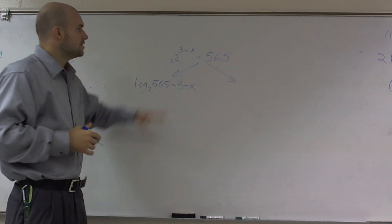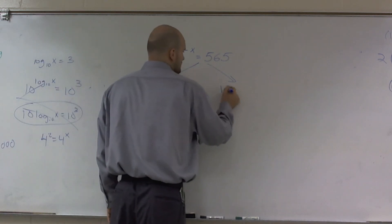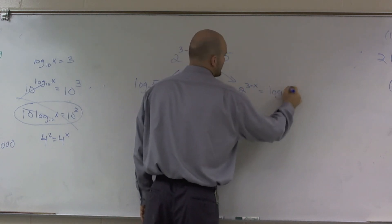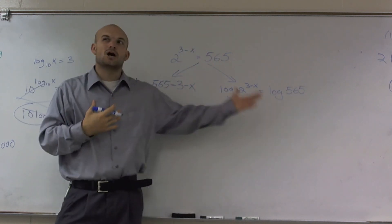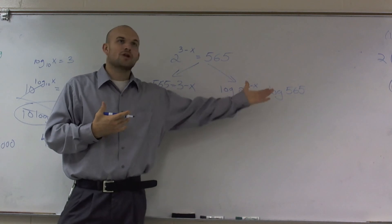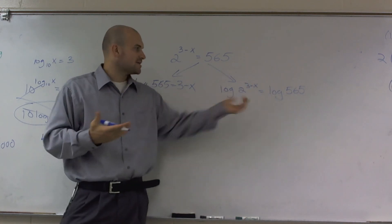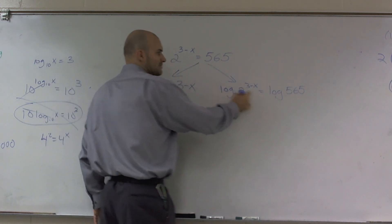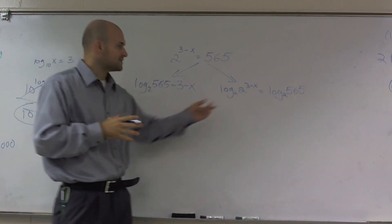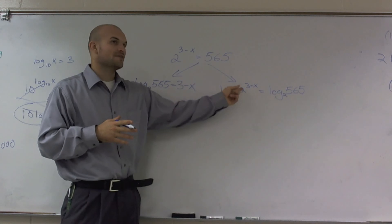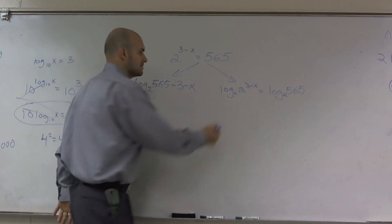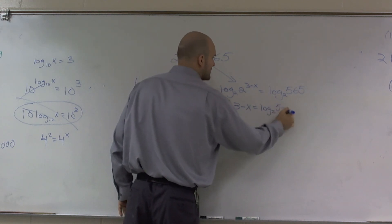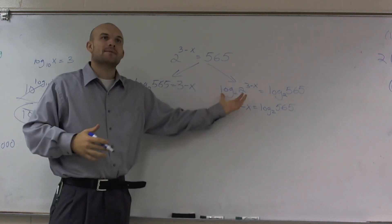Or what we can do is take log base 2 of both sides: log base 2 of 2 raised to 3 minus x equals log base 2 of 565. We choose the same base as what we're evaluating because log base 2 of 2 raised to 3 minus x cancels out by the inverse property, and we're just left with 3 minus x equals log base 2 of 565. Notice we get the exact same answer.